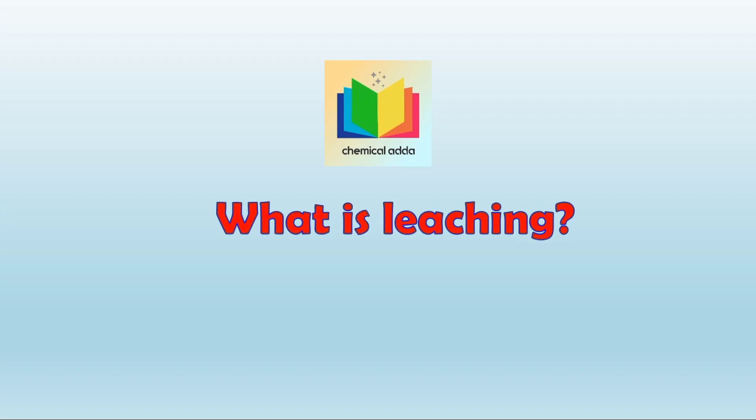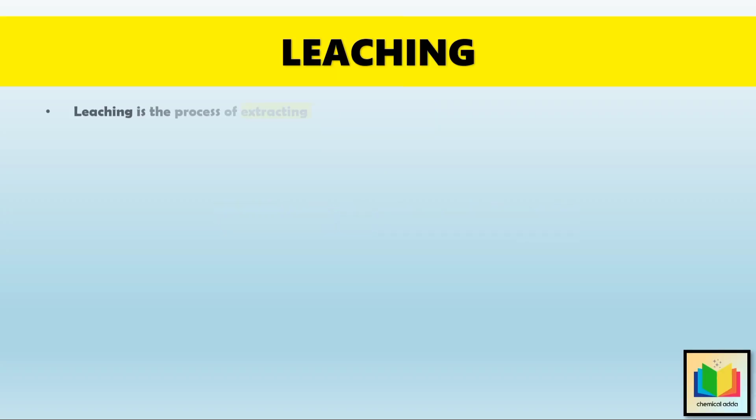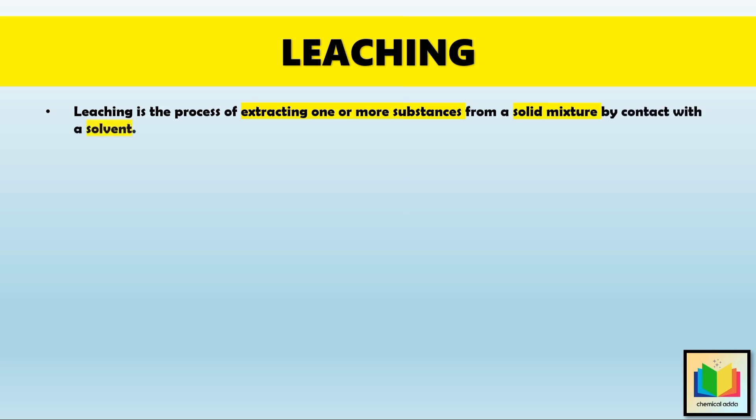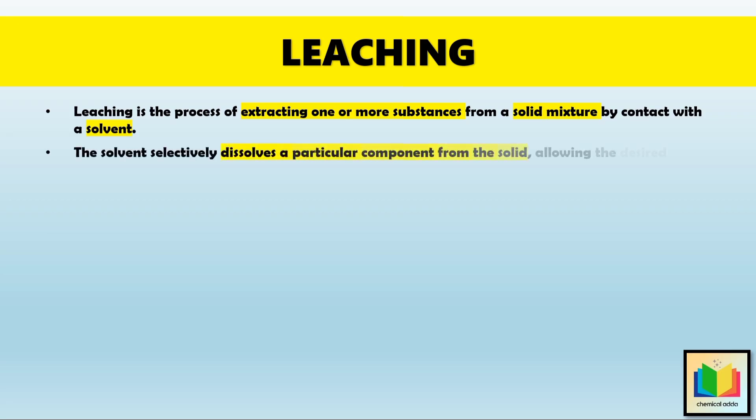What is leaching? Leaching is the process of extracting one or more substances from a solid mixture by contact with a solvent. Hence leaching is an operation in which a particular component of the solid is leached out with the help of a solvent. The solvent selectively dissolves a particular component from the solid, allowing the desired solute to be carried away. That means the solvent partially dissolves the solid substance from its mixture with an insoluble solid, and helps the necessary solute to be extracted.